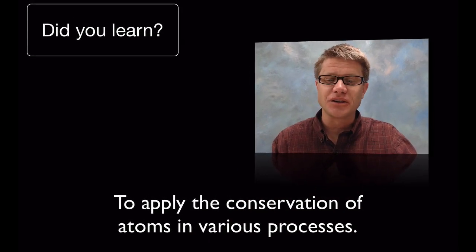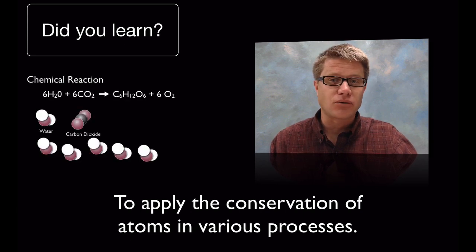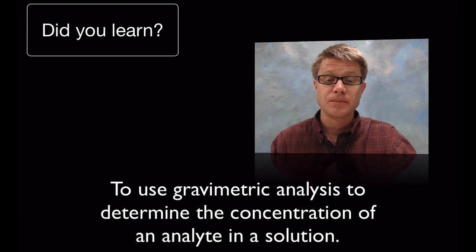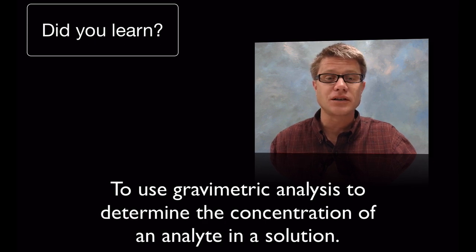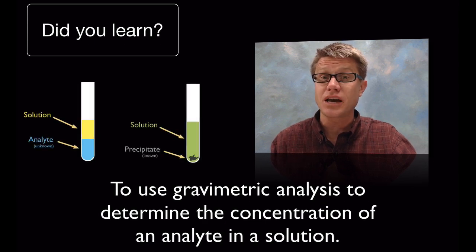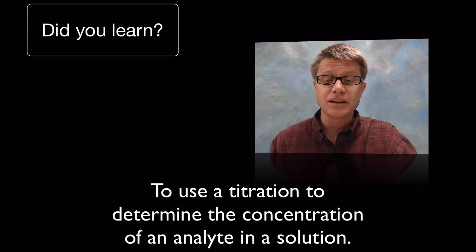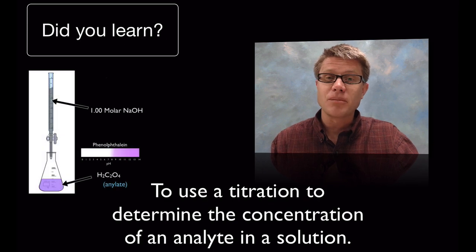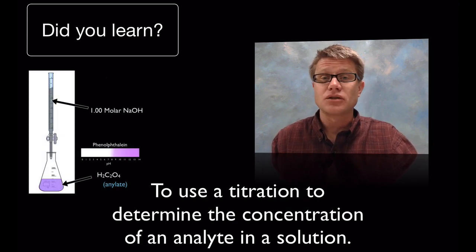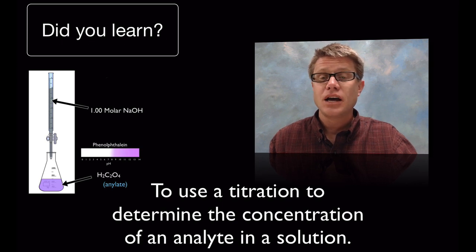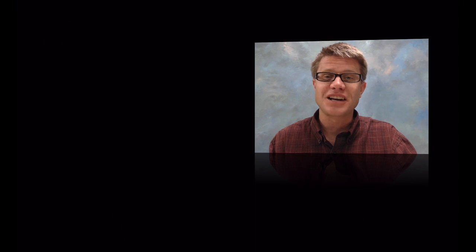Hopefully in this video you should have learned the following: how to apply the conservation of atoms in various processes — looking at an equation graphically to figure out what atoms are present and how they're being conserved. Did you figure out how to use gravimetric analysis to determine the concentration of a solution? Remember, in gravimetric analysis we use that solid produced at the end to work backwards to find the liquid. And finally, using a titration to determine concentration — we look at the amount of solution we have to add, in this case sodium hydroxide, and work backwards to find the analyte, in this case oxalic acid. I hope that was helpful.